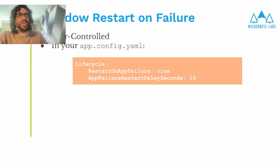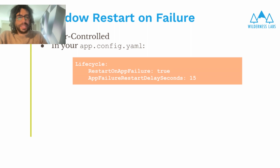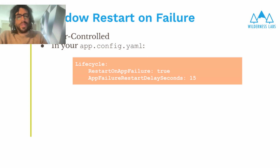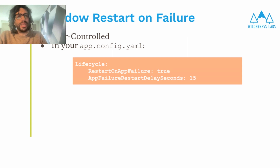Another useful feature provided by Meadow Core, which drives your app lifecycle, is automatic restart on failure. If a .NET exception is thrown — either unexpected or because you want your app to shut down — we provide that as a service. If Meadow Core receives an exception that has floated all the way up from your app, Meadow Core will perform a delay if you'd like, and then restart the device. If you're debugging, you probably don't want this mode on. If you're not debugging, you probably do want your device to restart.